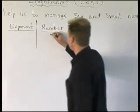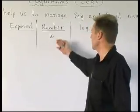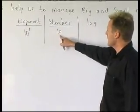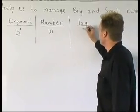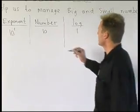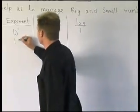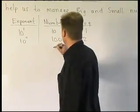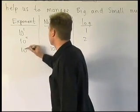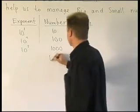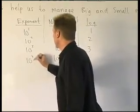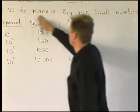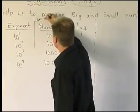Watch this. You've got the number 10. What's the exponent of 10? It's got one zero, so you write it as 10 to the 1. In log form, it's got one zero, so the log of 10 is 1. The log of 100 is 10 to the 2 — it's got two zeros, so its log is 2. The log of 1,000 — it's got three zeros, 10 to the 3, so its log is 3. The log of 10,000 is 10 to the 4, and its log is 4. These are large numbers.